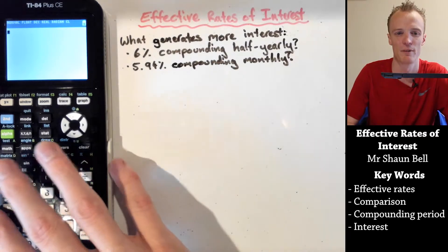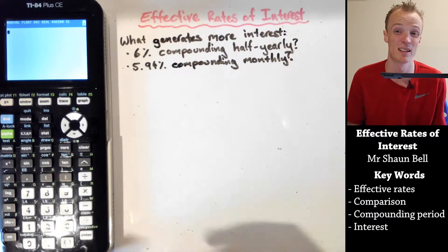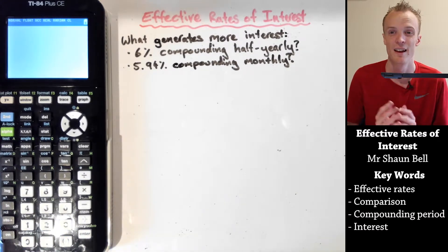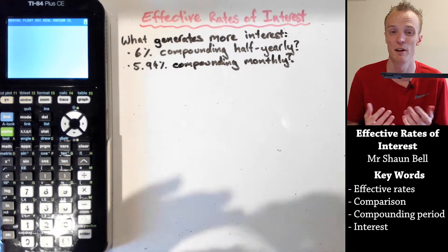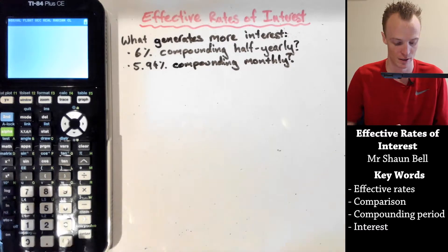Let's use this calculator for a moment to compare maybe $1,000 invested over one year and see which one would generate the most interest. To do that,